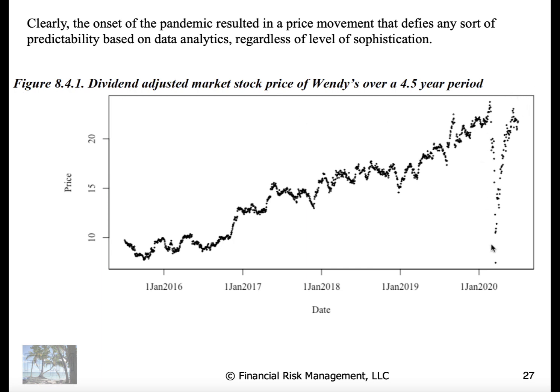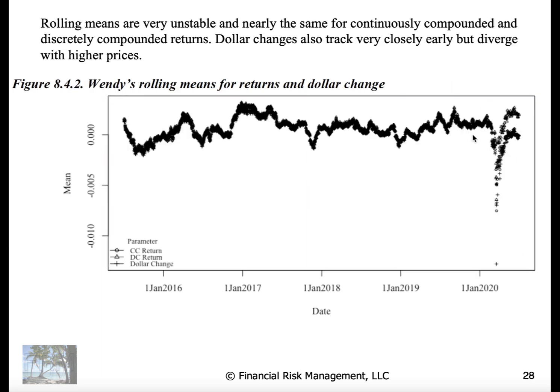This is the onset of the pandemic. And so what we notice is the rolling mean just bounces around, but the continuously compounded mean, discretely compounded mean, and the dollar change.